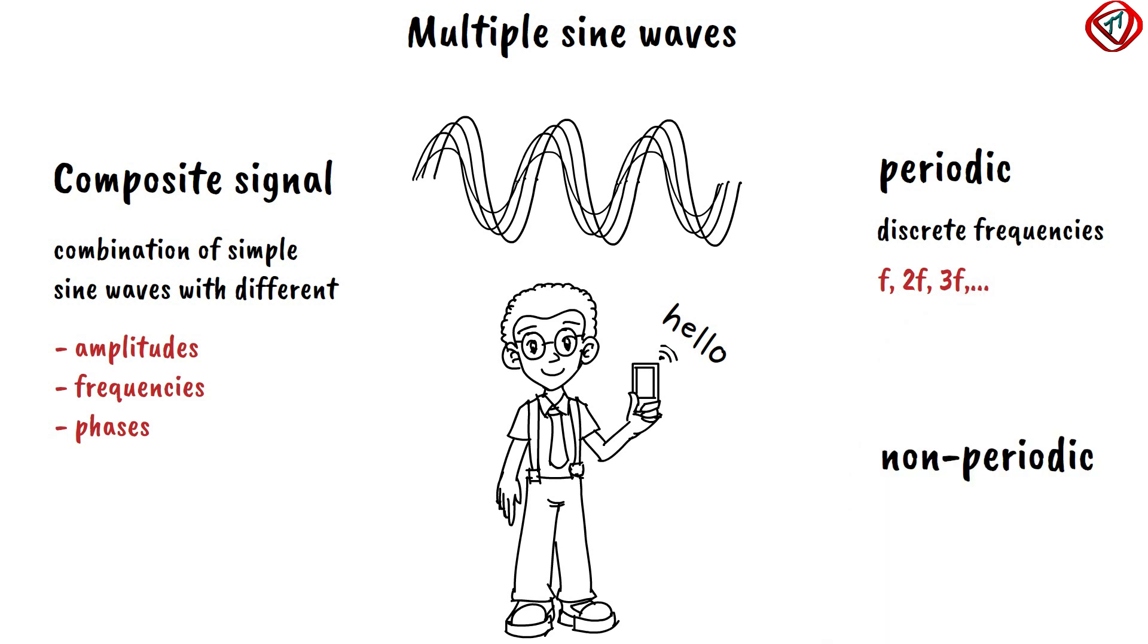A non-periodic composite signal has infinite sine waves with continuous frequencies that have real values, e.g. 1.2f, 1.3f, 1.4f, etc.